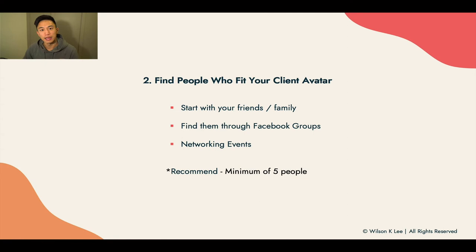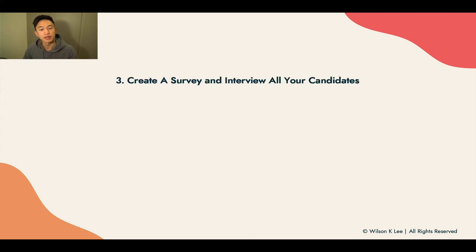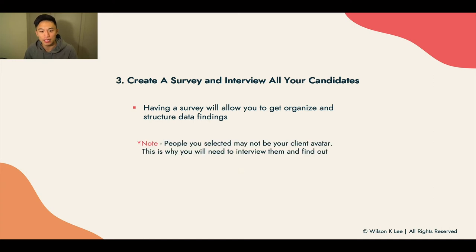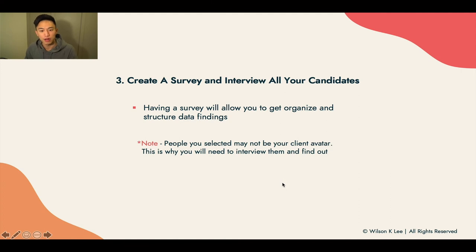We recommend finding at least a minimum of five different people. Whether they are truly your client avatar or not doesn't really matter at this point — our job is to find people who you think would fit. Next up is to create a survey and interview all the candidates you have shortlisted, having a survey that gets you organized and helps you structure all your data findings, so you can make meaningful decisions. This is the reason why we choose five different candidates — because people you selected may not all be your client avatar, and your new recipe might not be fitting for all of them.